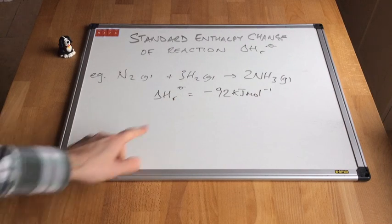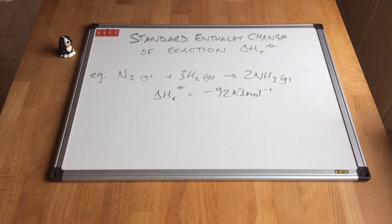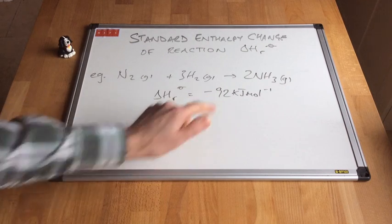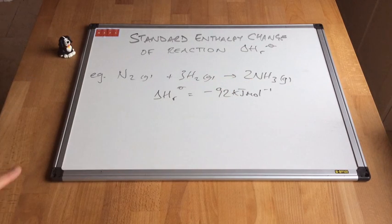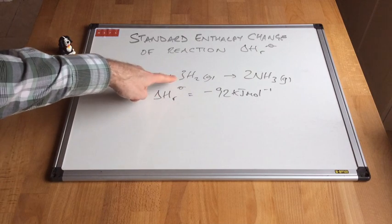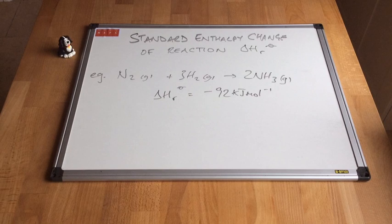The standard enthalpy change of reaction for this reaction is minus 92 kilojoules per mole, so this is an exothermic reaction. To carry out this reaction for the molar quantities written in the equation — one mole of N₂, three moles of H₂, making two moles of NH₃ — the standard enthalpy change is minus 92 kilojoules per mole.